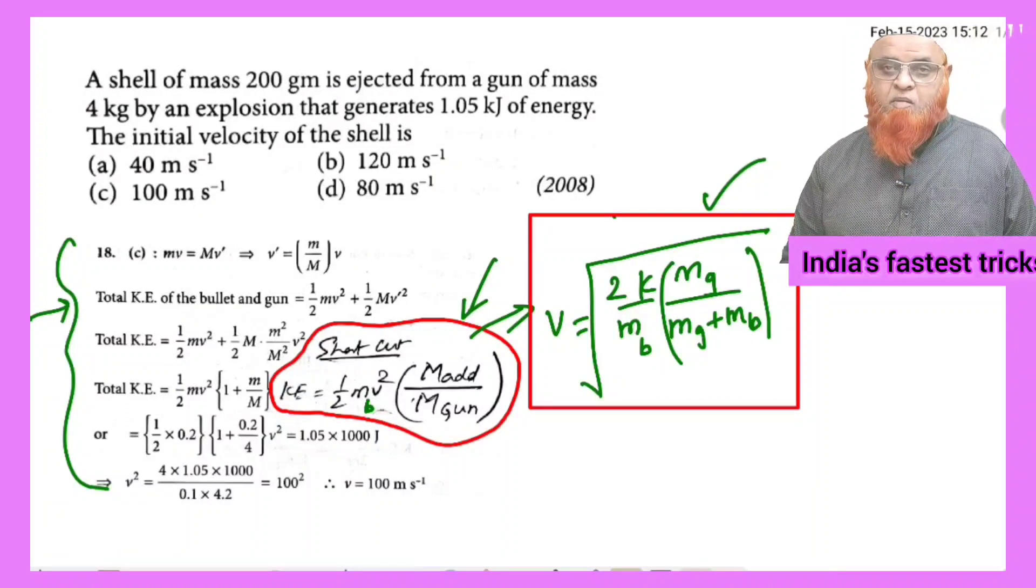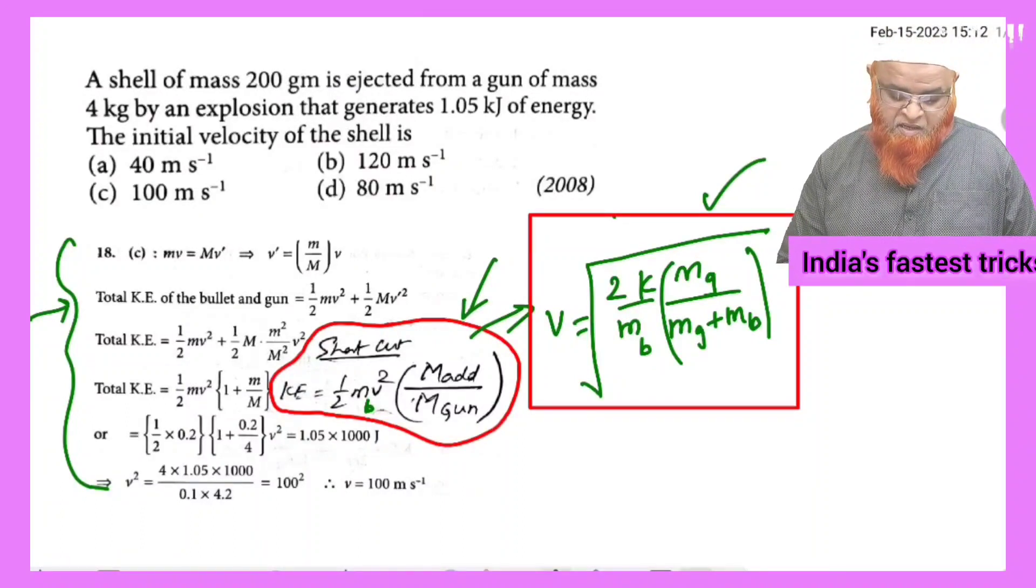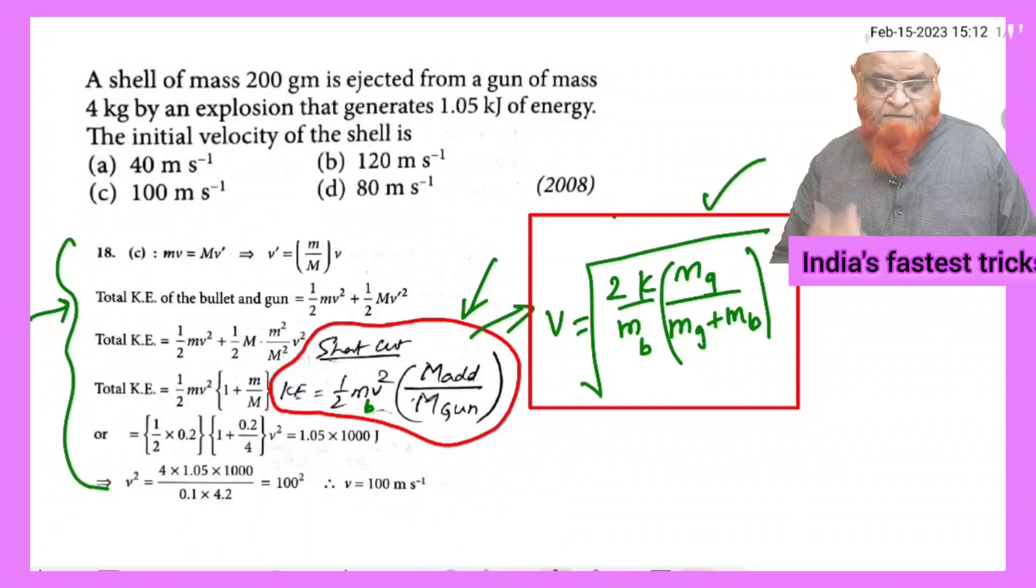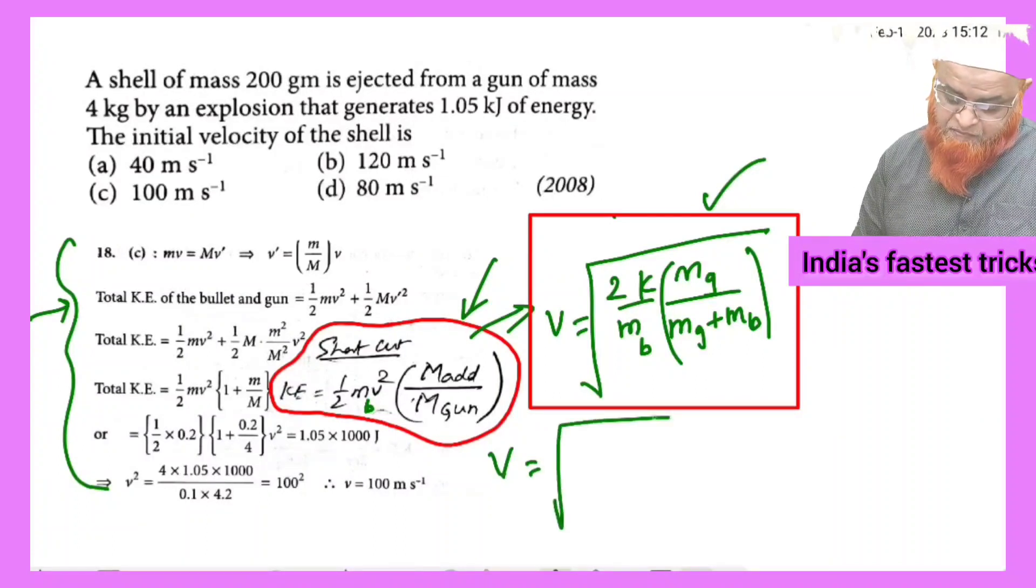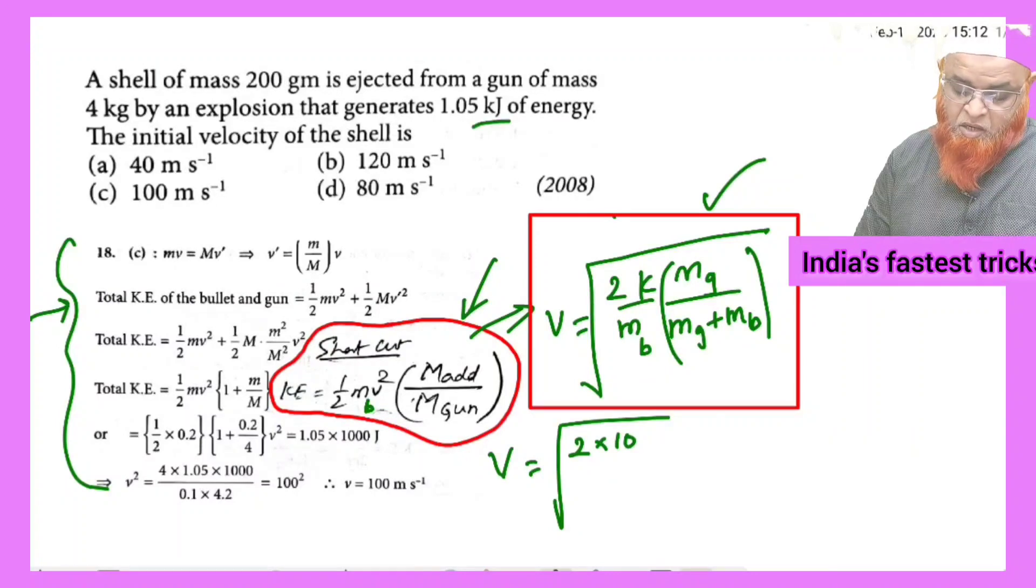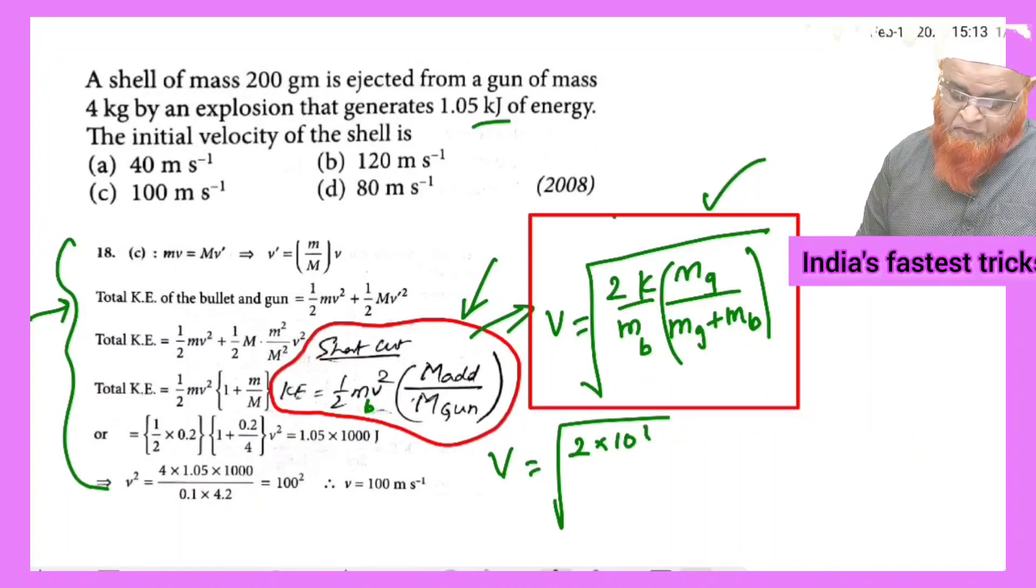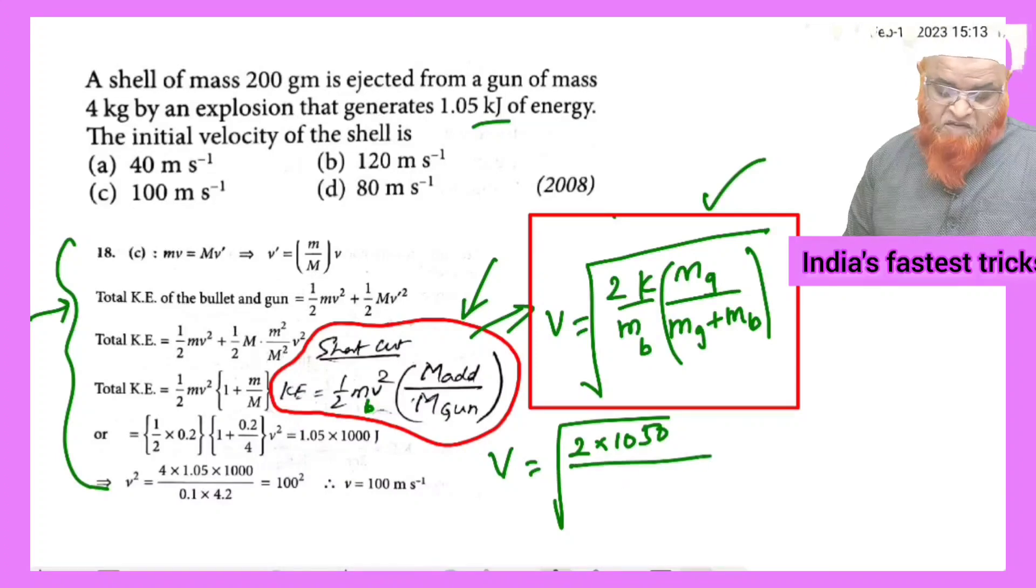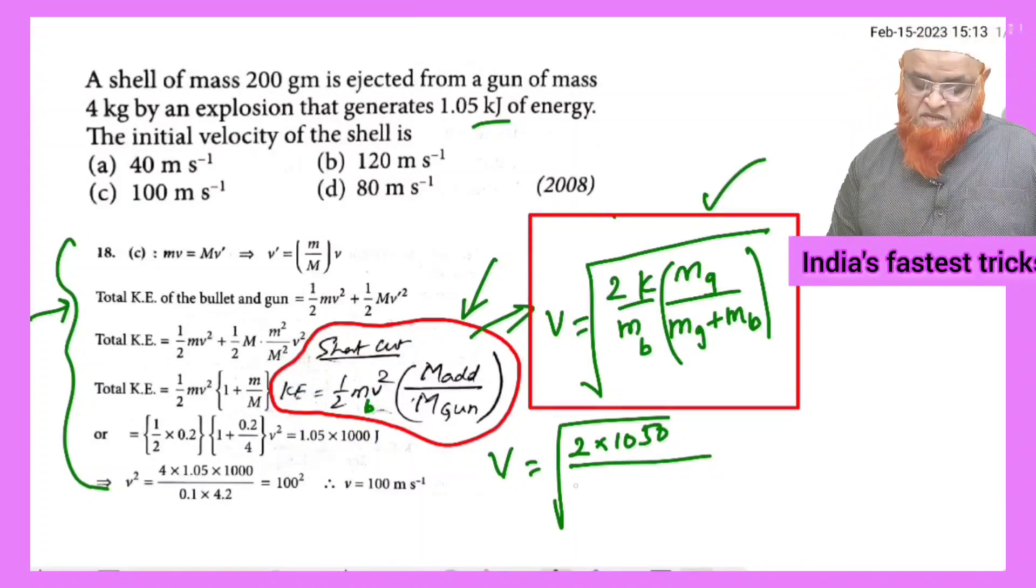Use this shortcut formula, substitute the values given and get the answer in a fraction of seconds. Velocity is the square root of 2 into kinetic energy, that is 1050 kilojoules converted into joules, divided by mass of the bullet which is 200 grams, taken as 0.2.